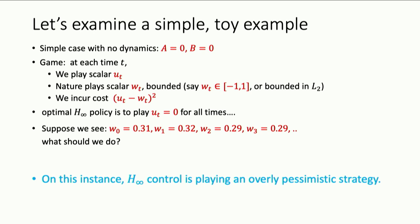It seems pretty natural that in this particular game, we might want to actually place something nearer to 0.3. But in this worst-case sense, we should never do that because we're going to have a higher cost. So in simple settings like this, the H-infinity type method seems to be a bit pessimistic — if we actually saw disturbances clustered around 0.3, there's a case to be made that maybe we should do something different.